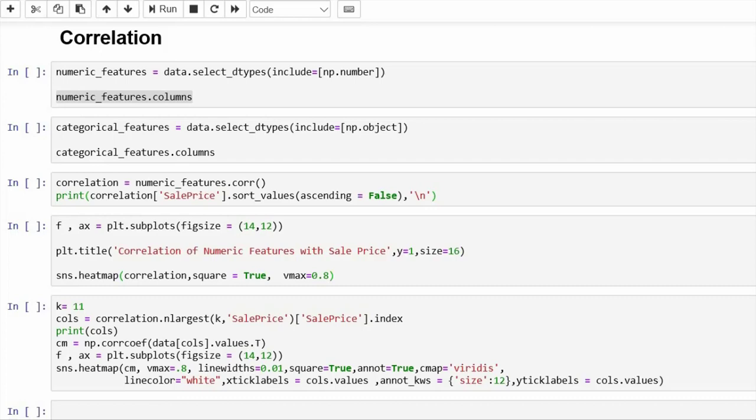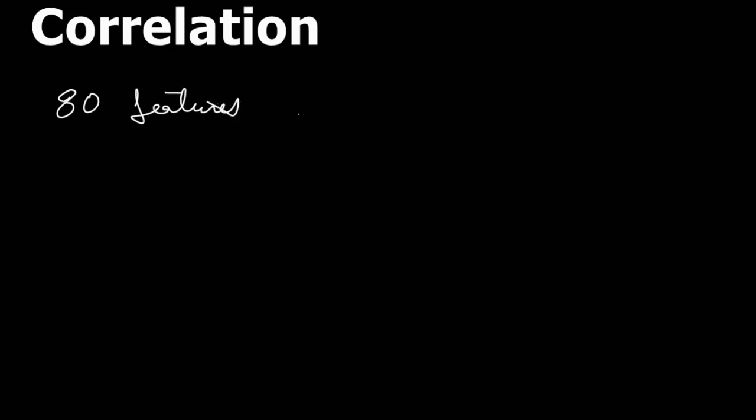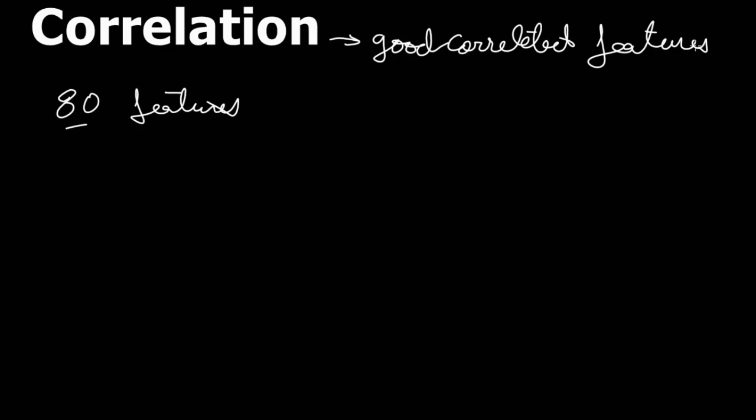First we need to understand why we are going for correlation — because correlation gives us the measure of variability between two features. We have around 80 features, and if I want to analyze each feature with respect to the target variable it is a very clumsy task. So what I will do is plot a correlation heat map, which will give me the most highly correlated features. I can then begin with those features instead of randomly selecting any feature with respect to sales price.